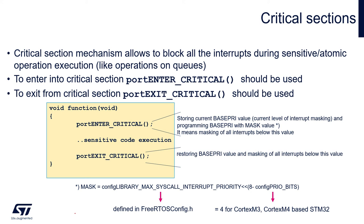As you can see from the picture, within portENTER_CRITICAL, we configure the BASEPRI register with the value of configLIBRARY_MAX_SYSCALL_INTERRUPT_PRIORITY to block all interrupts related to the operating system. Then we can perform any operation touching or modifying queues, tasks, or semaphores. After the sensitive code execution, we restore BASEPRI - the masking register - to the default value of zero, so all interrupts are unlocked and unblocked.